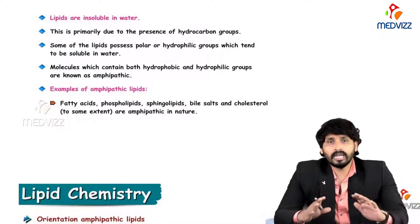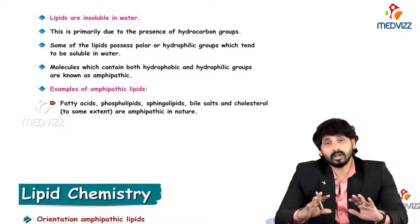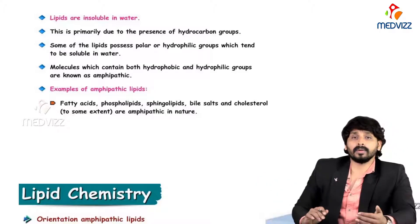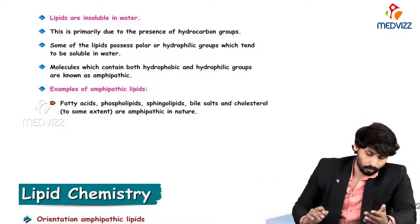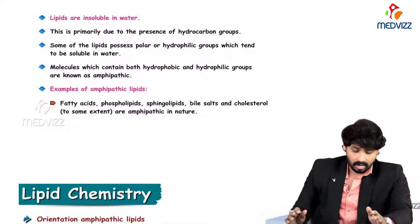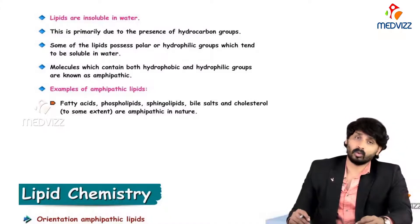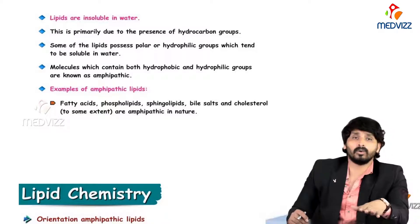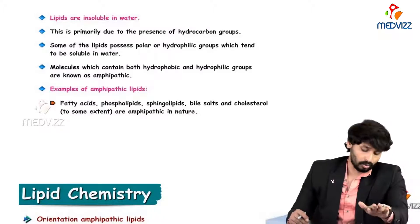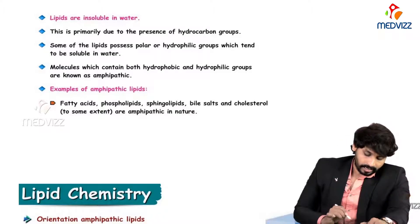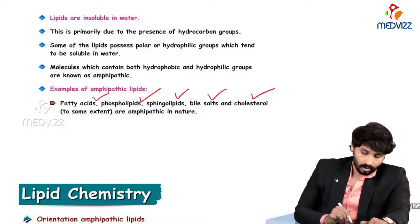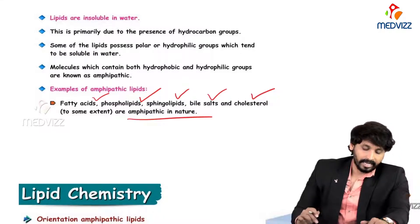Amphipathic lipids — by the name itself, you can understand that these lipids are insoluble in water. This is primarily due to their hydrocarbon groups. However, some lipids possess polar or hydrophilic groups which tend to be soluble in water because of their hydrophilic heads. Examples of amphipathic lipids include fatty acids, phospholipids, sphingolipids, bile salts, and cholesterol.